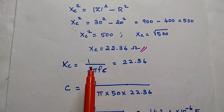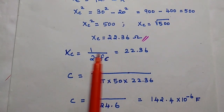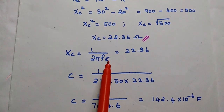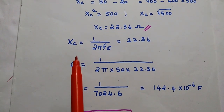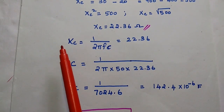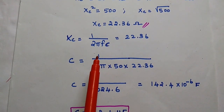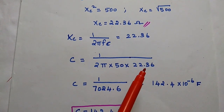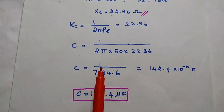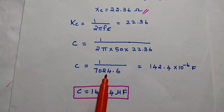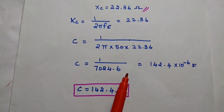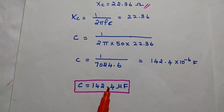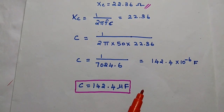Now we find the capacitance. Using XC equals 1 divided by 2·π·F·C, we get C equals 1 divided by 2·π·F·XC equals 1 divided by 2·π times 50 times 22.36 equals 1 divided by 7024.6, giving C equal to 142.4 times 10 to the power minus 6 farads, that is 142.4 microfarad.